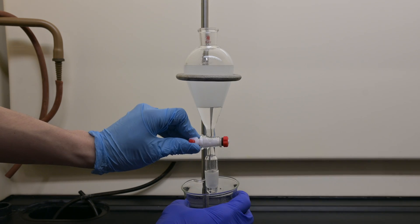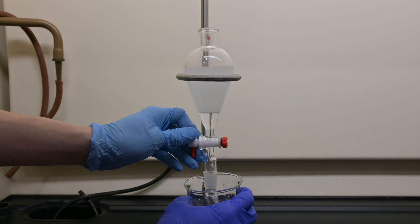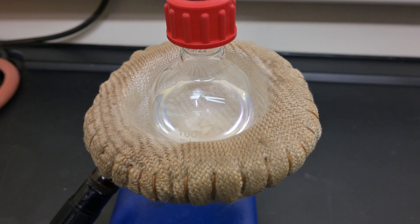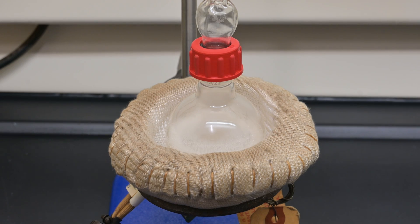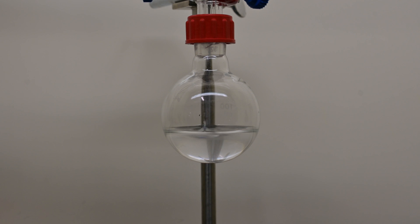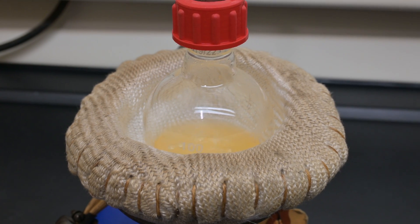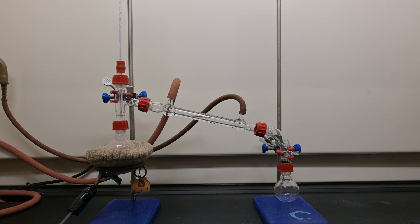Next, we add the dichloromethane extraction to a distillation setup, and we start heating to distill off the dichloromethane. Once the dichloromethane has boiled off, the column condenser is removed, and the flask is switched out for a new one.